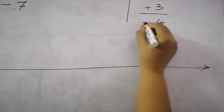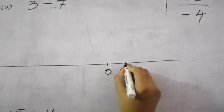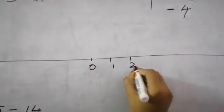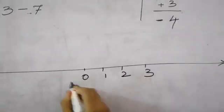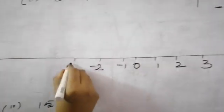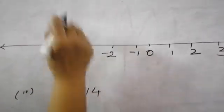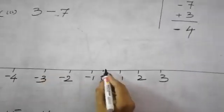Draw the number line. Here you are getting minus 4. So take minus values also. 0, 1, 2, 3 and this side minus 1, minus 2, minus 3 and minus 4.